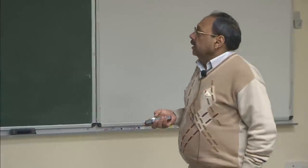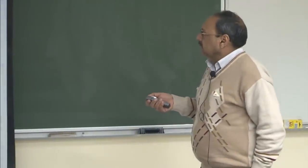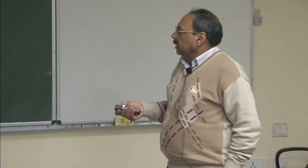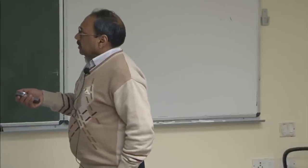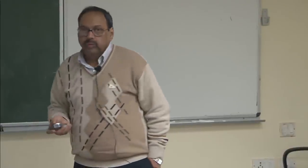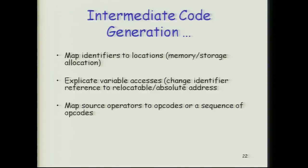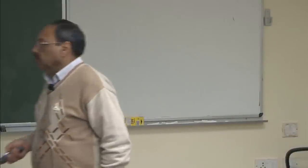We said that the process is going to be that all the identifiers are going to be mapped into certain locations, and then all the variable accesses depending upon where these identifiers were, we were going to find out exact locations from where we could pick up all this information — basically all the addressing mode information will come here. Then we want to map all the source operators to the target operators, and if there is no equivalent target operator then we want to write some kind of macro. Then we want to convert all the conditionals and iterations into a sequence of testing jumps.